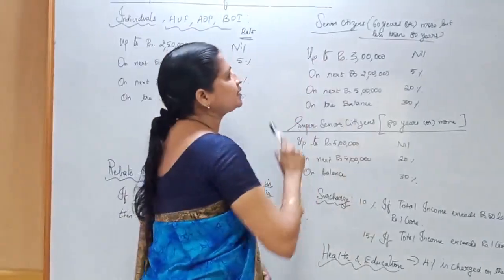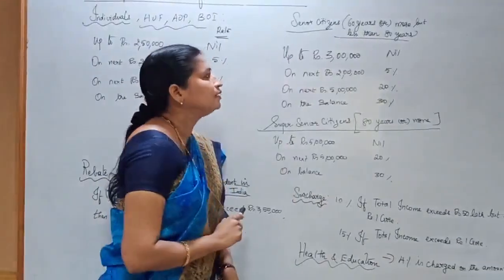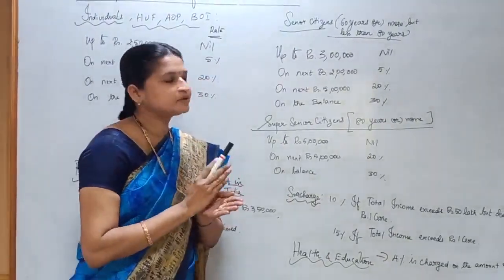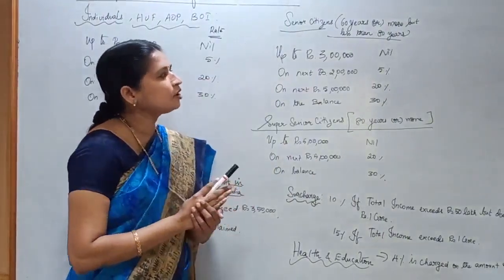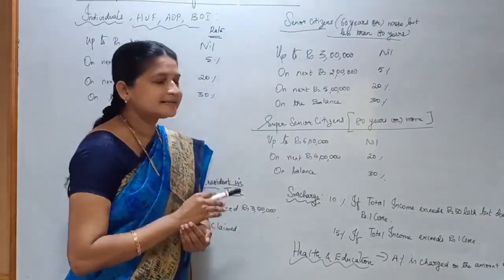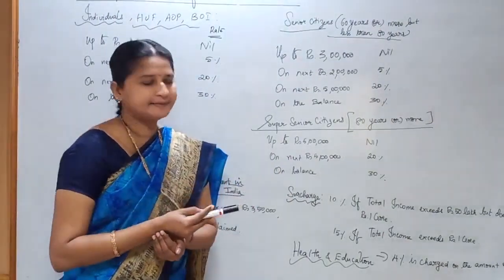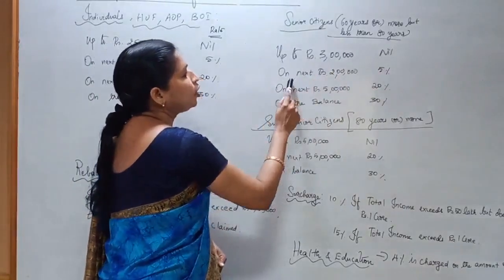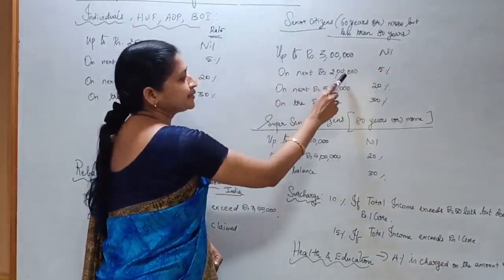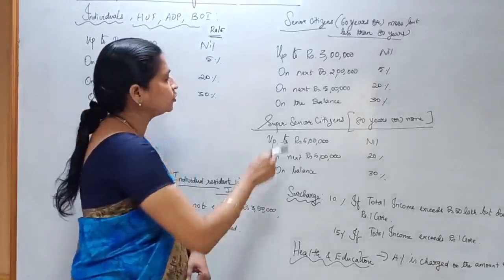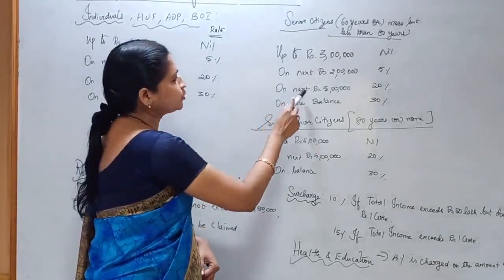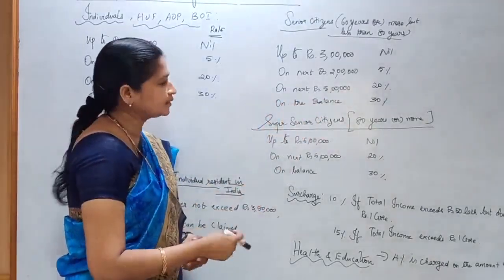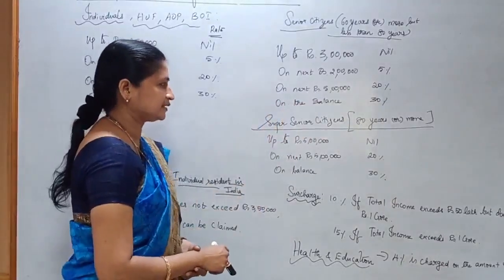In the case of senior citizens — those persons whose age is 60 years or above but less than 80 years — up to Rs. 3,00,000 the tax is nil. On the next Rs. 2,00,000 the rate is 5%. On the next Rs. 5,00,000 the rate is 20%, and on the balance income the rate is 30%.